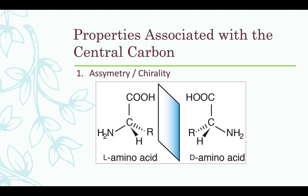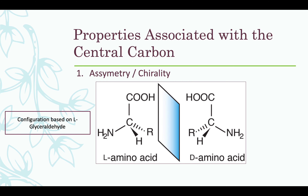Moving to the properties associated with the central atom: first, it has chirality, meaning there are four different substituents bonded to the central carbon — your carboxyl, amino, R, and H. The two stereoisomers of your amino acids are designated as L or D. Note that this configuration is based on L-glyceraldehyde and is not related to your R and S configuration. You have an L-amino acid when your amino group is on the left side of the alpha carbon, and a D-amino acid when your amino group is on the right side.